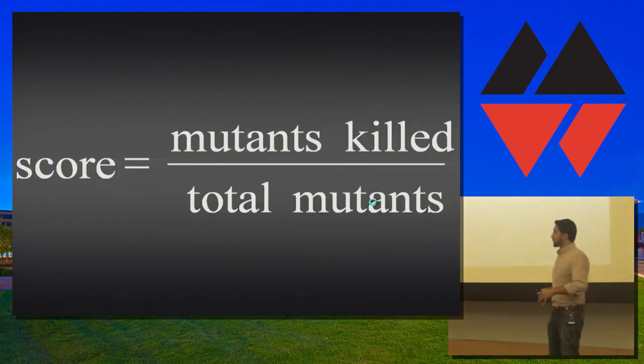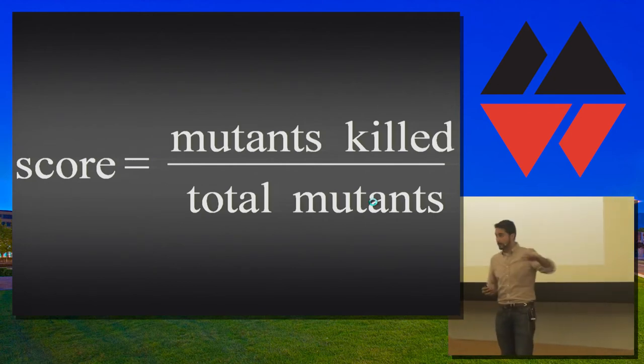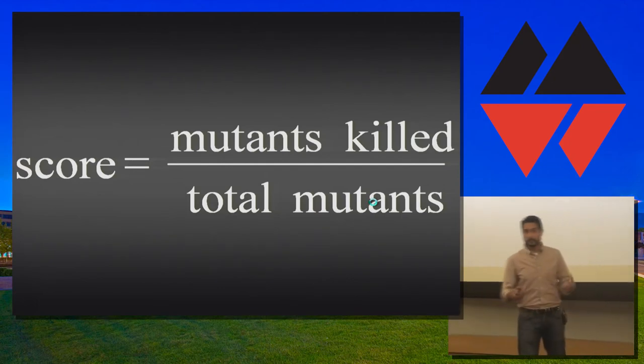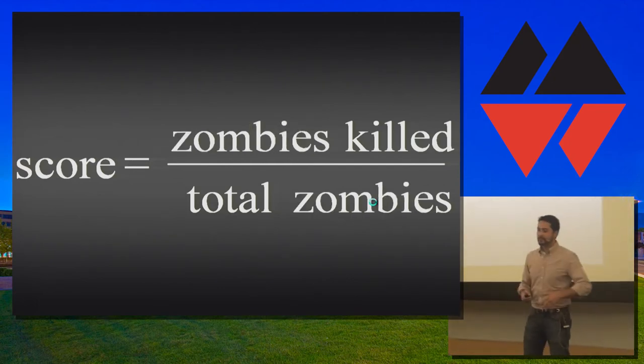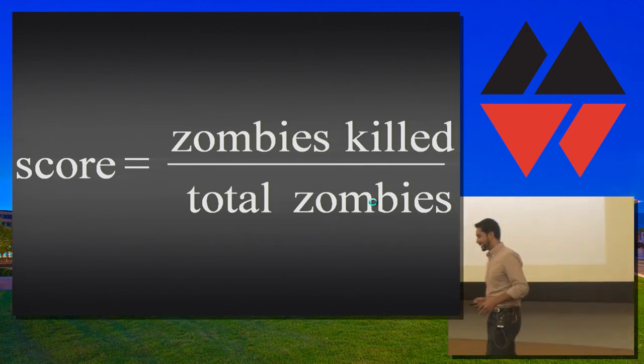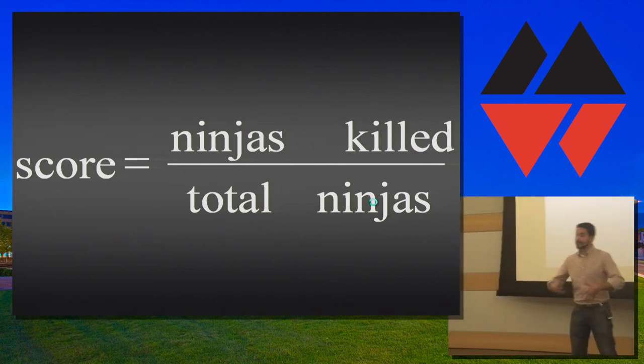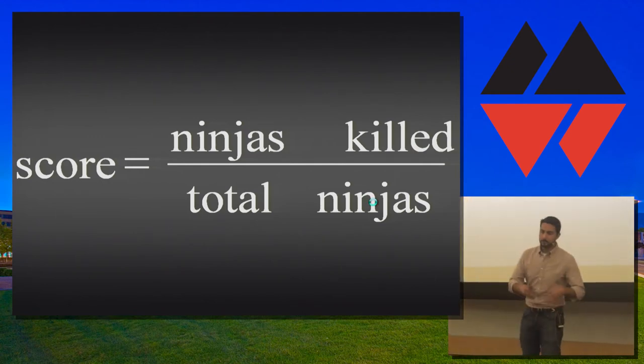So, how do we get the score? Well, the score, like I said before, is just a ratio. It's the total number of mutants killed or detected by your test divided by the total number of generated mutants. And mutation analysis is one of those very few techniques in software development that you can actually have fun with because you can have mutants killed or zombies killed or ninjas killed. And the reason I'm saying this is because the more fun you have applying a technique, the more you will find yourself applying it consistently. And the more consistently you will improve your test and therefore the quality of your software.